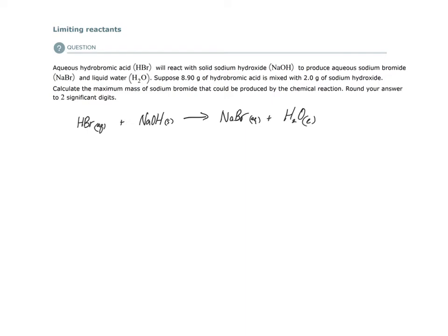So let's look at the amounts of our starting substances, the given amounts. We have 8.90 grams of hydrobromic acid, and we have 2 grams of sodium hydroxide. Calculate the maximum mass or the theoretical yield of sodium bromide. They want to know how many grams of that will be produced. So what we're being asked to do is to convert from a starting mass of one of our reactants to a theoretical yield of a product. How much of this can we make maximum? But there's a problem.